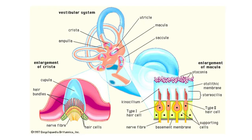The important structures are the ampulla of the three semicircular canals and the macula of the two otolith organs. The key structures are the cupula and the macula, where we see the otoconia — basically calcium carbonate particles. Because these are heavy particles, they make the utricle and saccule a bio-accelerometer, making them sensitive to gravity.